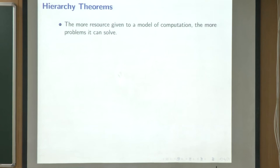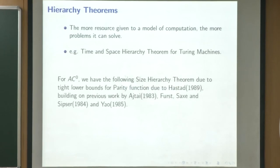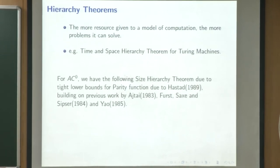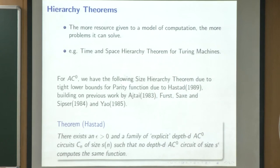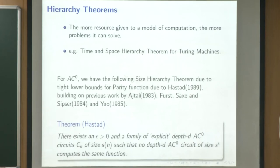The first result is about restricted hierarchy theorems for AC0 parity. Hierarchy theorems say informally that the more resources a computational model has, the larger the class of problems it can solve. The result we have is similar: if you look at AC0 circuits of fixed depth, we can separate size s from size s to the 0.001, and we want to say something similar about AC0 parity.